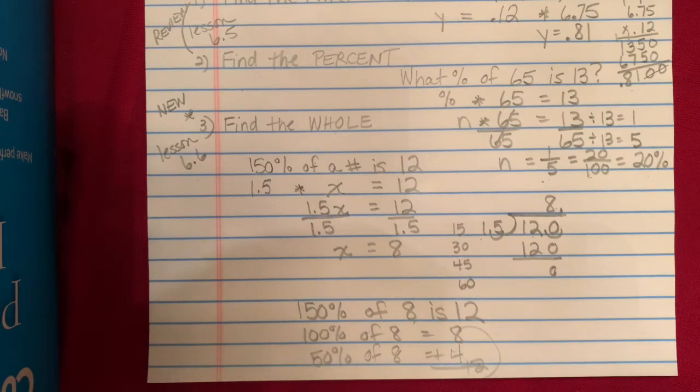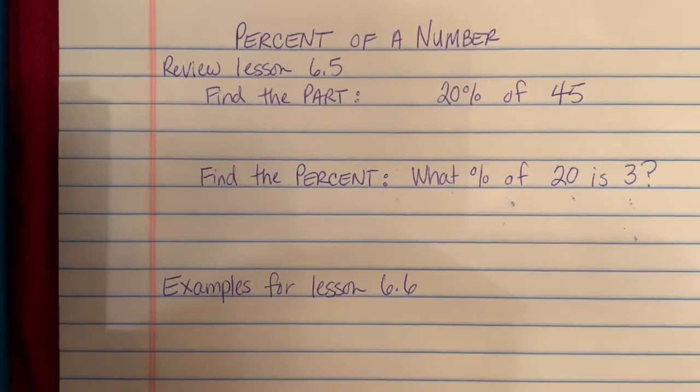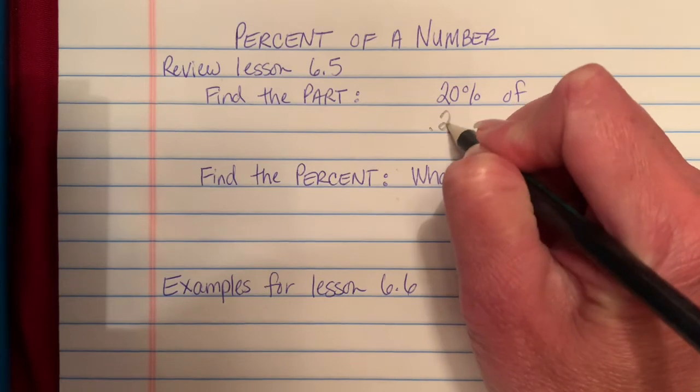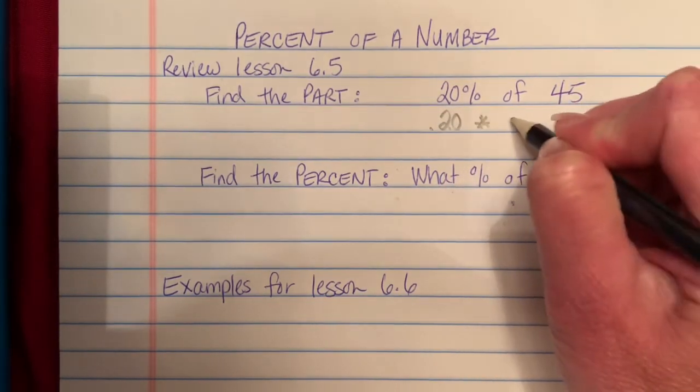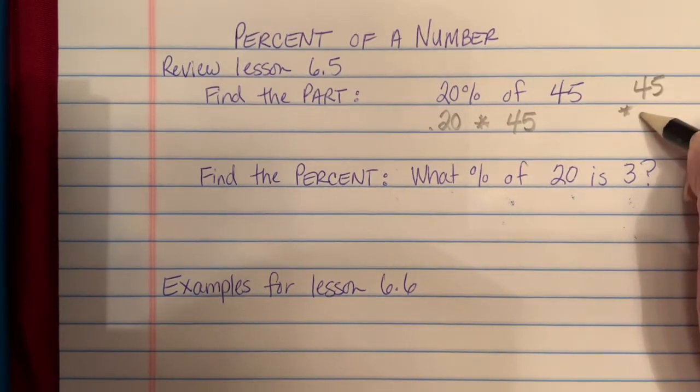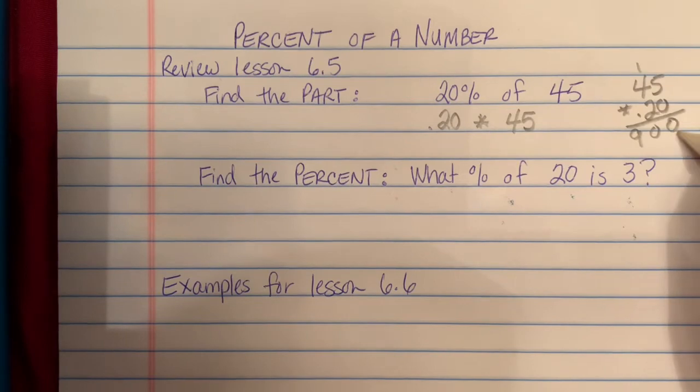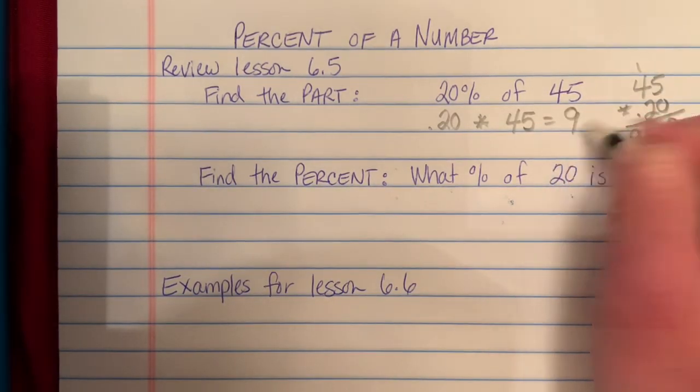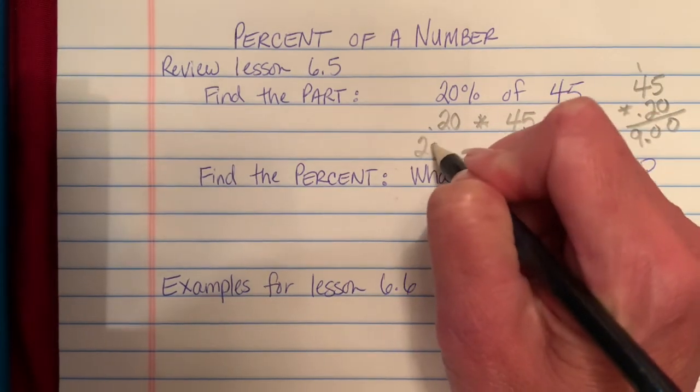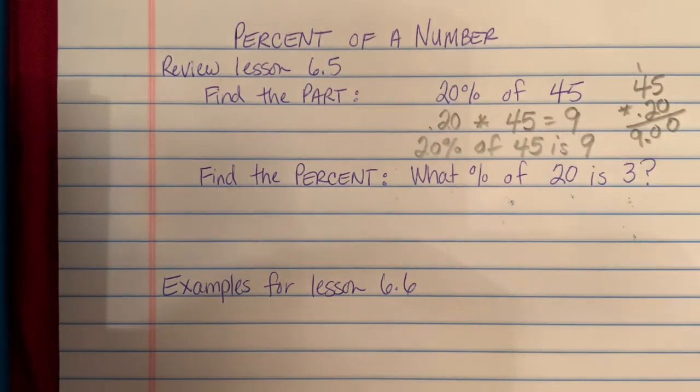So let's practice some more and then we'll get into the examples in our book. We're going to take one more look at percent of a number, review from Lesson 6-5. Finding the part, where we're given 20% of 45. We change our percent to a decimal and multiply by our number, 45 times 0.20. Remove our decimal, is 9. So 20% of 45 is 9.